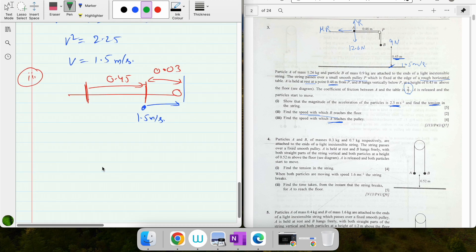We have to find the acceleration again, so F equals ma. Forward force - there's no forward force because B has already hit the ground. Forward force is 0 and resistive force is the friction, equals ma. Mass of A is 1.26, acceleration is unknown. Now we plug in all the values to find acceleration.